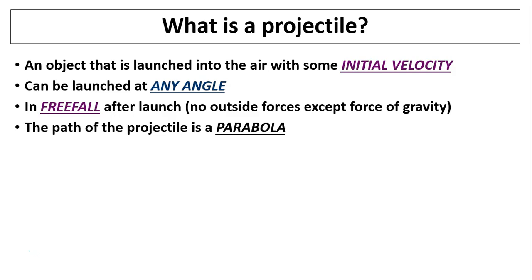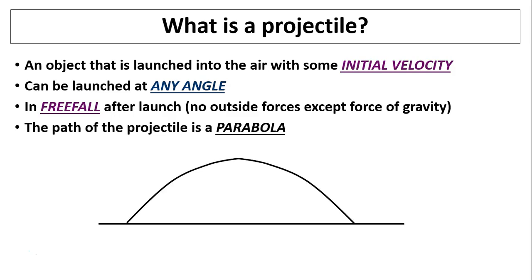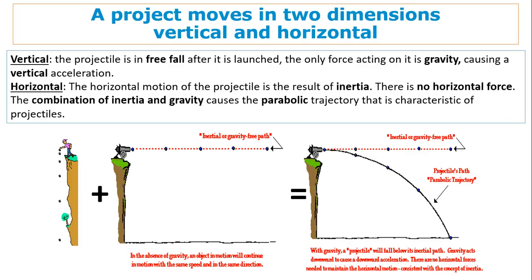The path of a projectile is a parabola. At any point on this path, the only force acting on it is gravity, because the projectile is in free fall. Gravity produces gravitational acceleration, which points downward toward the center of the Earth.